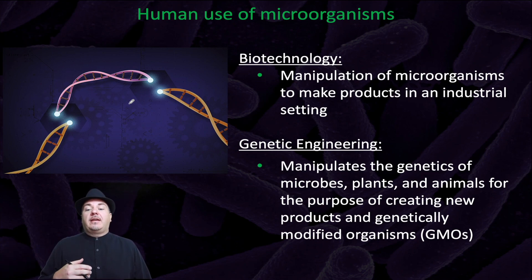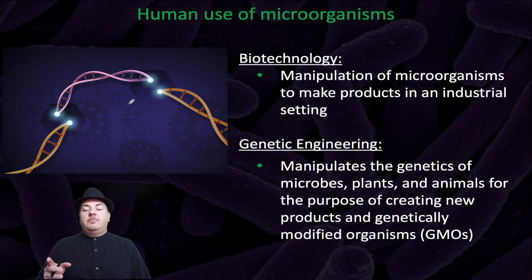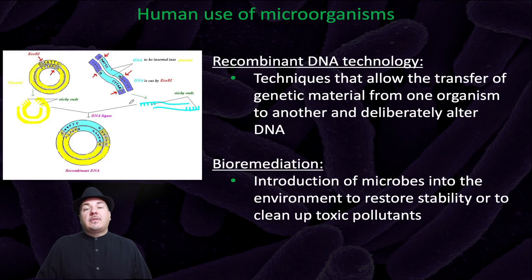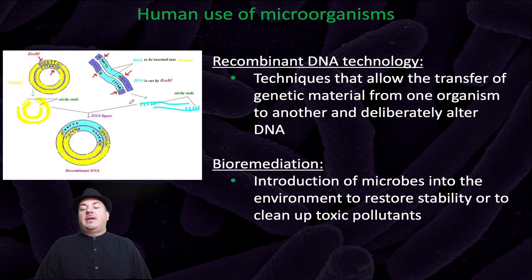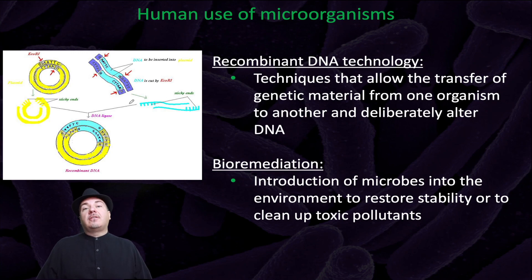That involves genetic engineering, where we manipulate the genetics of microbes, plants, and animals for the purpose of creating new products and genetically modified organisms, or GMOs. It also involves recombinant DNA technology, which are the techniques that allow the transfer of genetic material from one organism to another and to deliberately alter DNA — for example, taking the gene from humans that codes for insulin protein and putting that gene into yeast so yeast can start building human insulin protein for us.